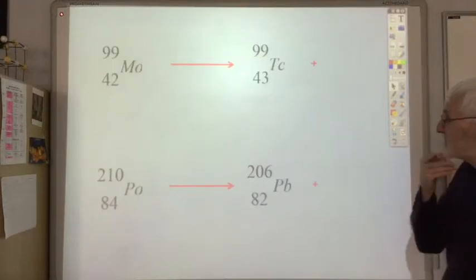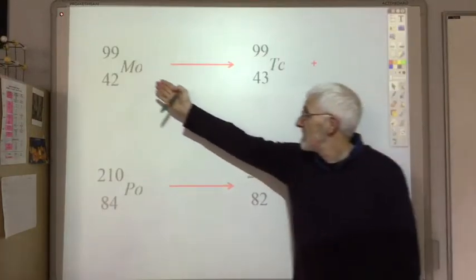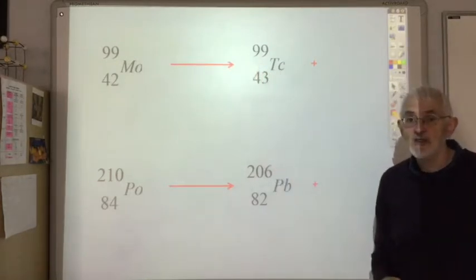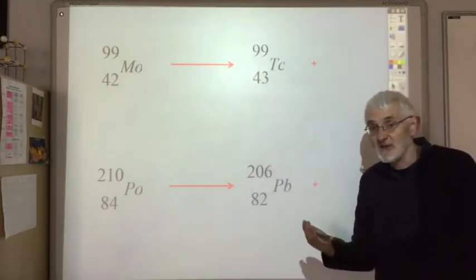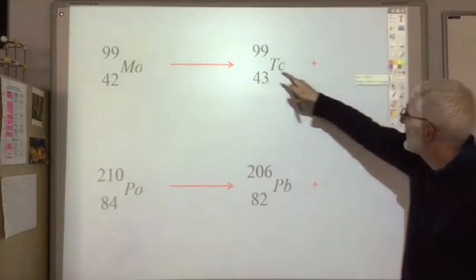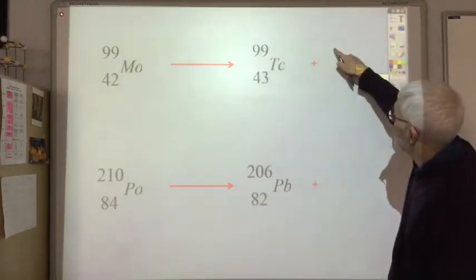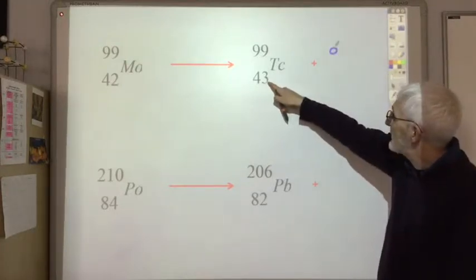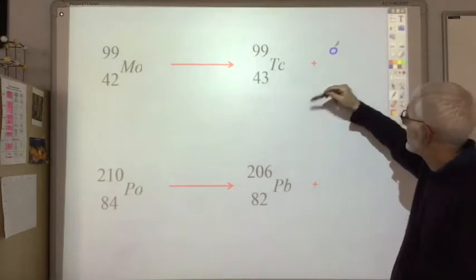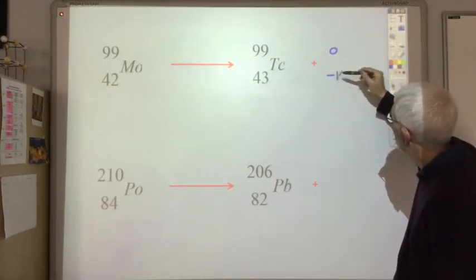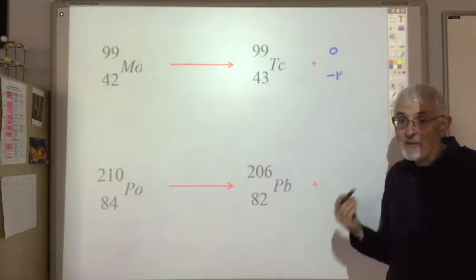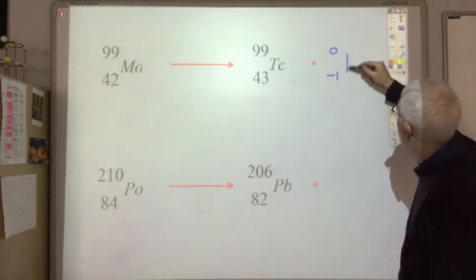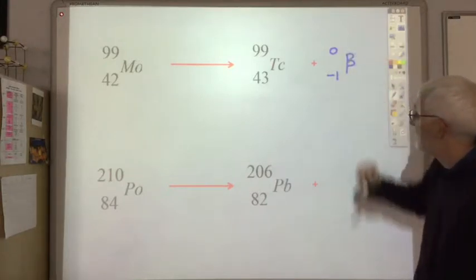Another way of asking the question is to give the starting radioisotope and the product, and ask you to predict what type of radiation has been emitted. Again, just do the maths. The mass number here must be 0 — 99 plus 0 equals 99. And 43 plus something gives 42, so it must be minus 1. So it's going to be a beta particle — you can write it with 'e' or with beta, either is acceptable.